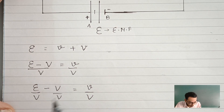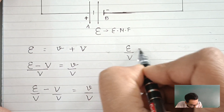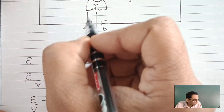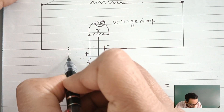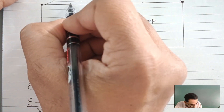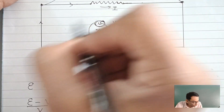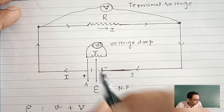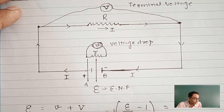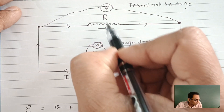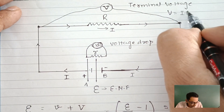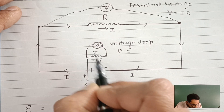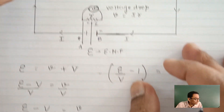Now, V upon V is 1, so this becomes E/V minus 1, equal to v/V. Now, small v equals I times r as per Ohm's law, so the terminal voltage capital V equals I times R, whereas this tiny v equals the same current flowing across it — so this is I times r. These two values I am going to substitute.